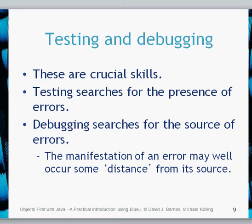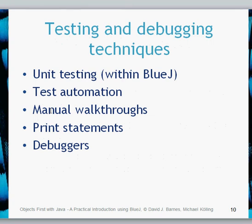How do we go about testing and debugging? We must appreciate that these are crucial skills needed for all software development. You'll know from experience that finding a bug in a program or application is very annoying. JUnit, which is known as unit testing within BlueJ, is a framework developed for Java to allow testing on applications, units, classes, and methods. This will allow us to automate our tests.